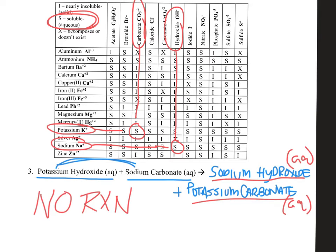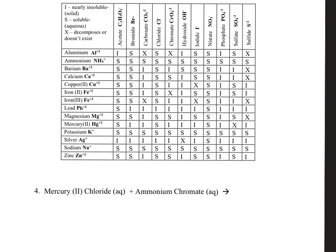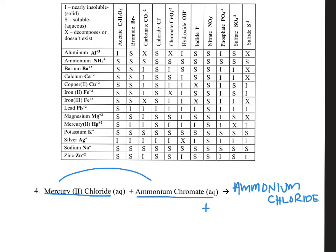Remember, RXN is just shorthand for reaction. No go there for number three. On to number four — we have a potential double replacement, so let's switch our ammonium and mercury around. Ammonium is not going to be with chromate anymore but with chloride. And also, mercury two is now going to be with chromate. So we've got mercury two chromate as our two new potential compounds.